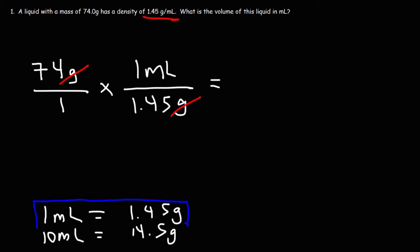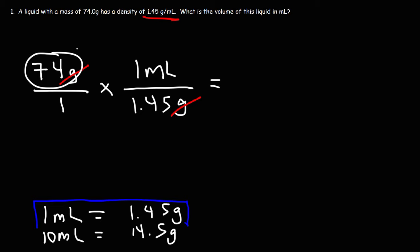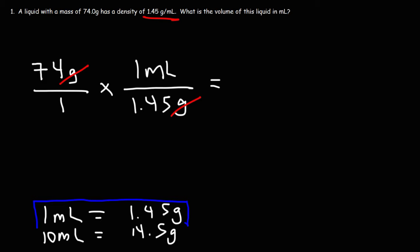So now let's do the math. Whenever you have two numbers on top of two fractions, you need to multiply. If you have one number on top and one number on the bottom, you need to divide. So the operation that we're going to perform is division. It's 74 divided by 1.45. And so the answer in this problem is 51.03 milliliters. So that is the volume of this particular liquid.